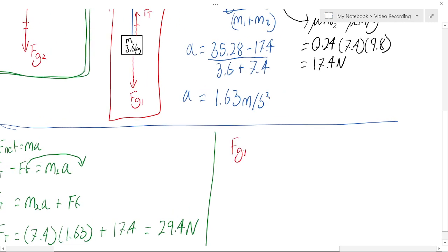we would see that Fg1 is winning, Ft is losing, it's equal to m1a.